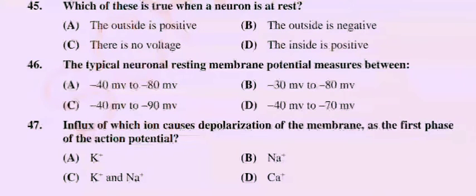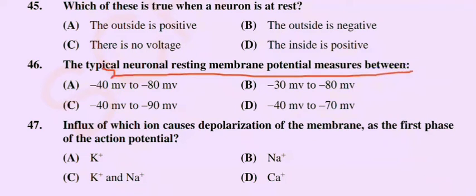Bismillahirrahmanirrahim, Assalamu Alaikum dear students. Today we will start from question number 46: The typical neuronal resting membrane potential measures between — option A: minus 40 mV to minus 80 mV, option B: minus 30 mV to minus 80 mV, option C: minus 40 mV to minus 90 mV, option D: minus 40 mV to minus 70 mV. The correct option is option C: minus 40 mV to minus 90 mV.